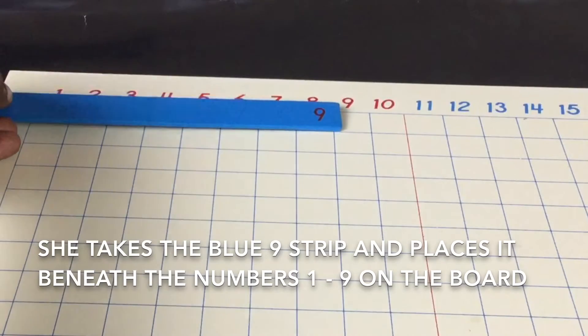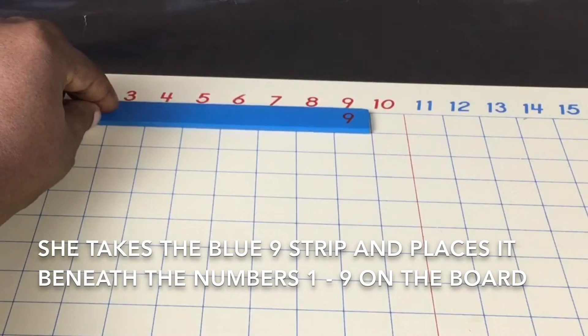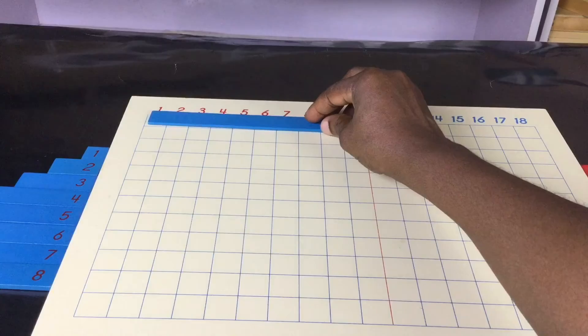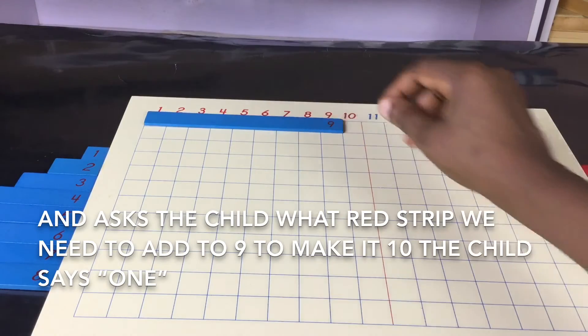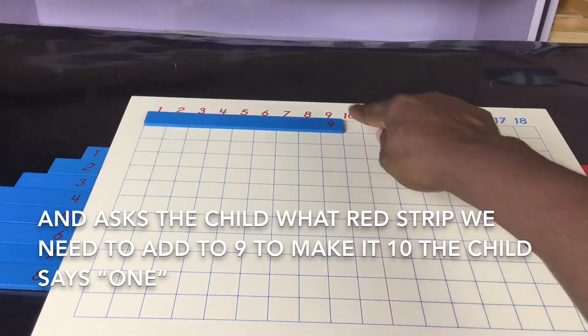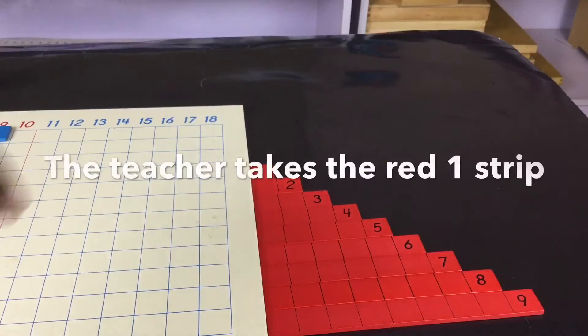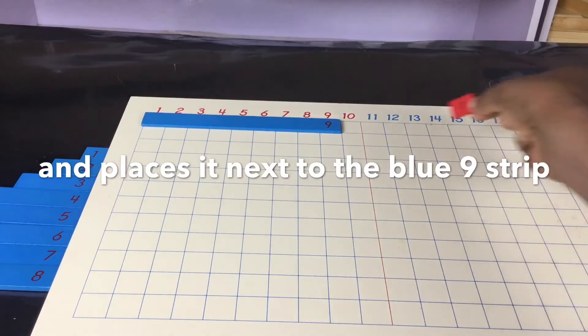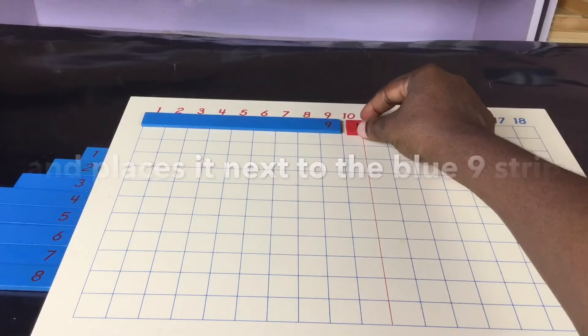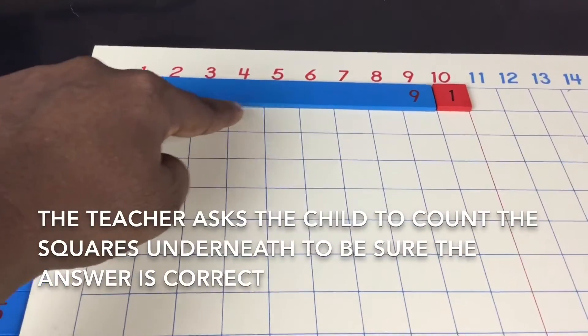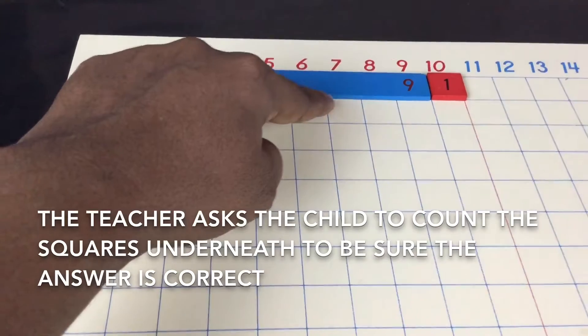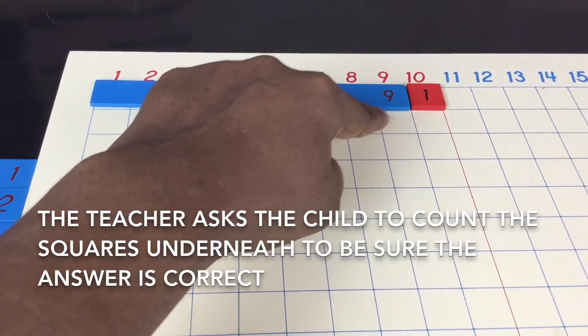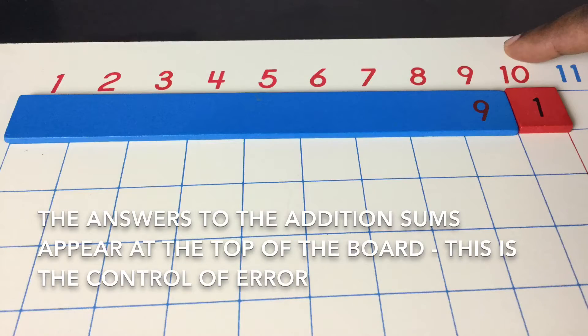She takes the blue nine strip and places it beneath the numbers one to nine on the board and asks the child what red strip we need to add to nine to make it ten. The child says one. The teacher takes the red one strip and places it next to the blue nine strip. The teacher asks the child to count the red squares underneath to be sure the answer is correct.